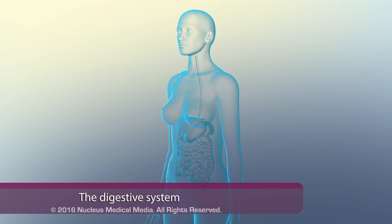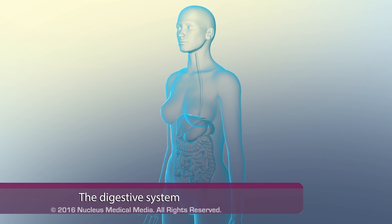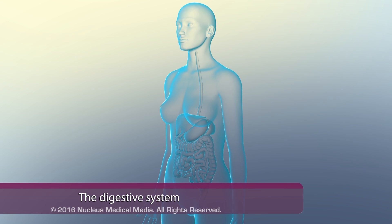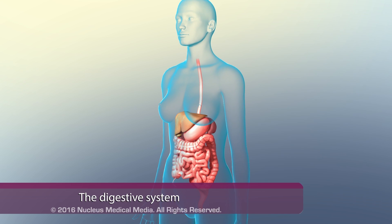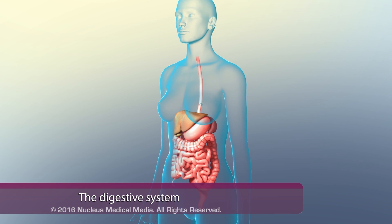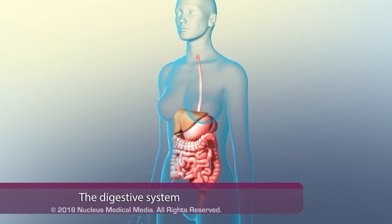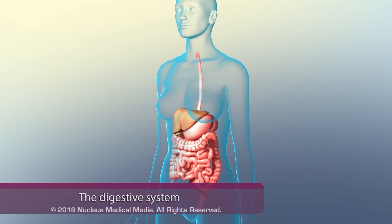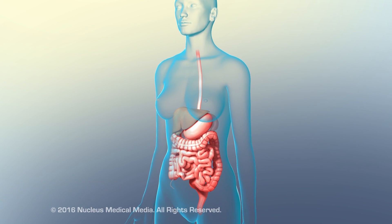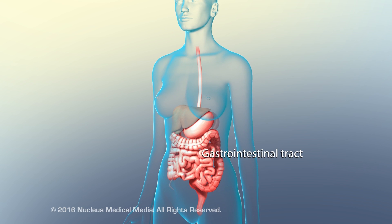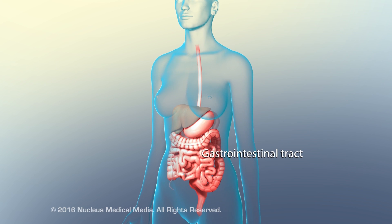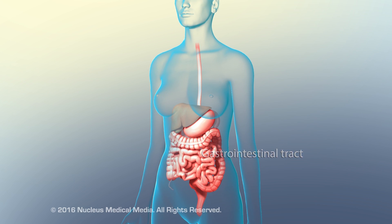The digestive system consists of specialized organs and glands that process food and supply nutrients to body cells. The digestive organs form a continuous tube called the gastrointestinal tract.